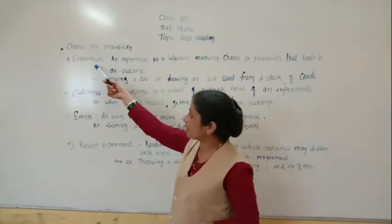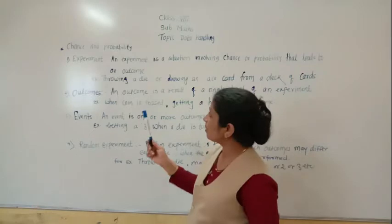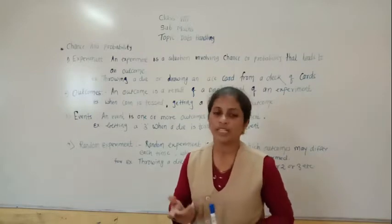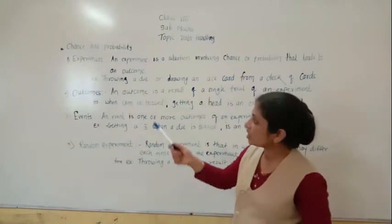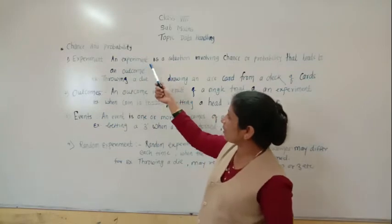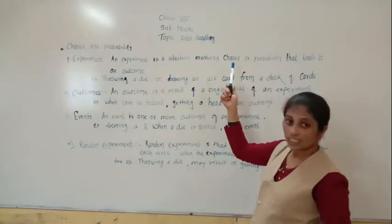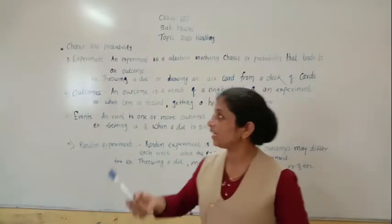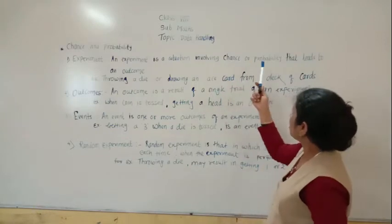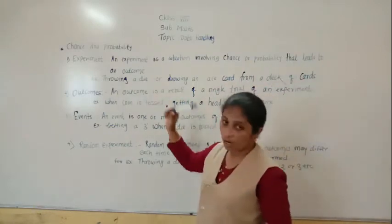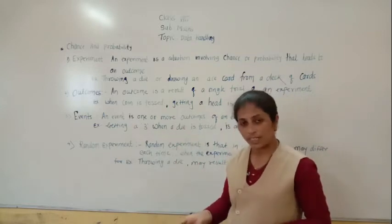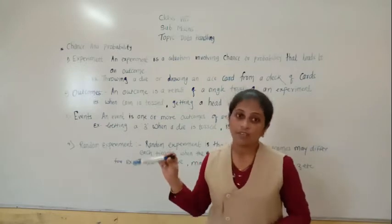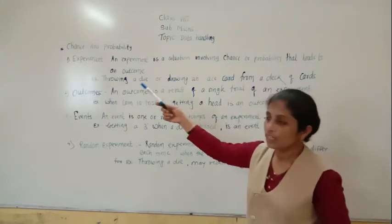First we will see 'experiment.' What is meant by an experiment? An experiment is a situation involving chance or probability that leads to an outcome — something we have to find out. When we do an experiment, we are taking a chance. For example, throwing a dart or drawing a card from a deck of 52 cards.